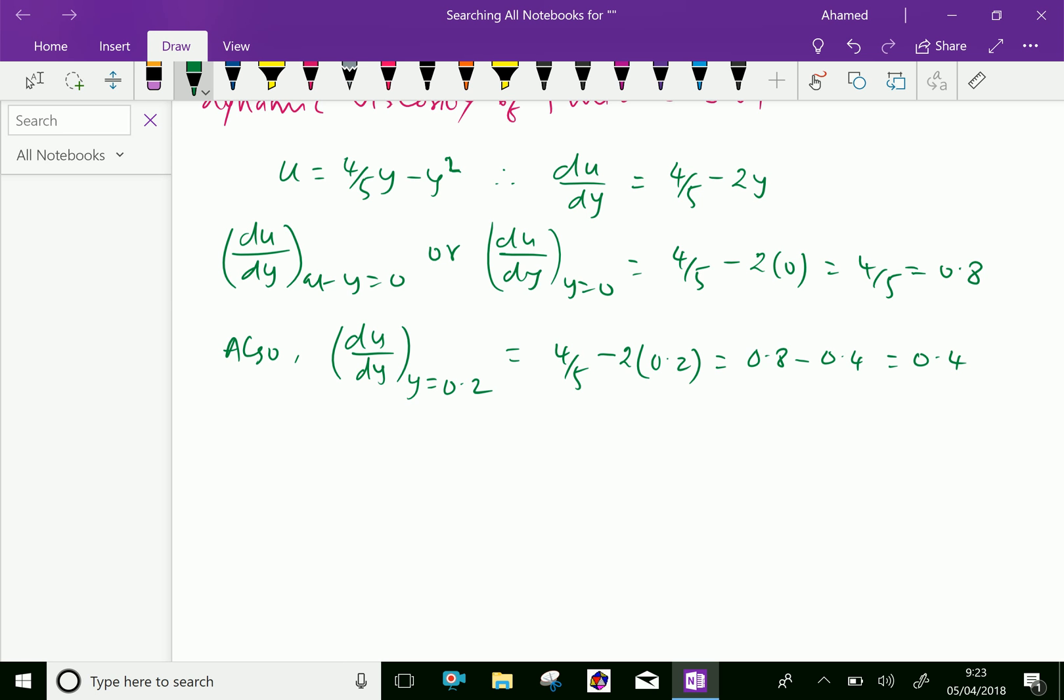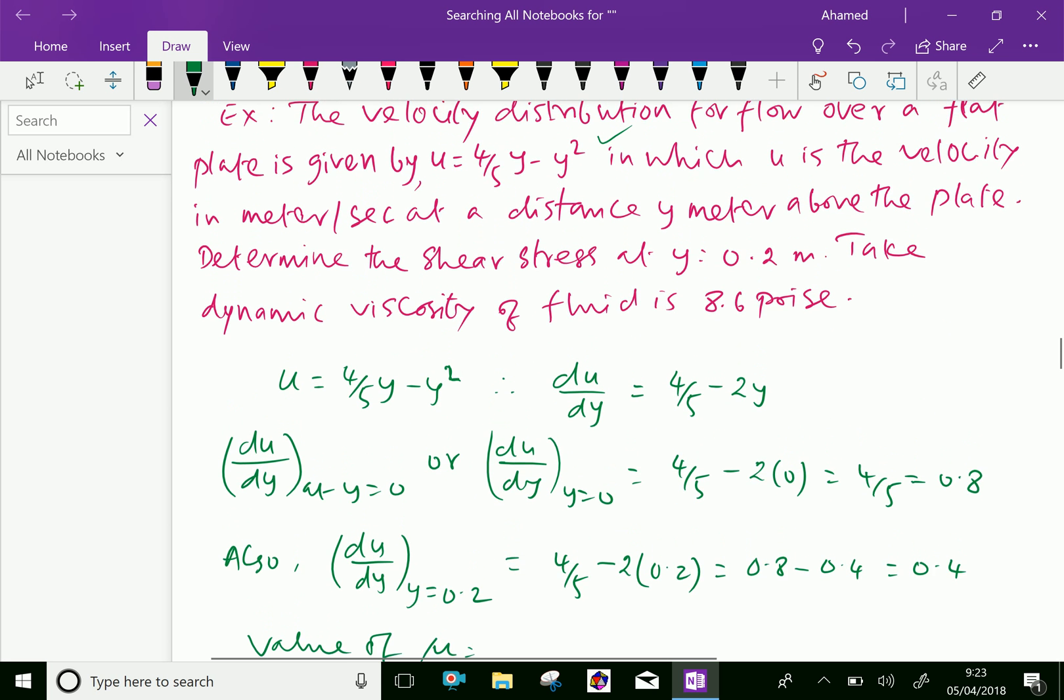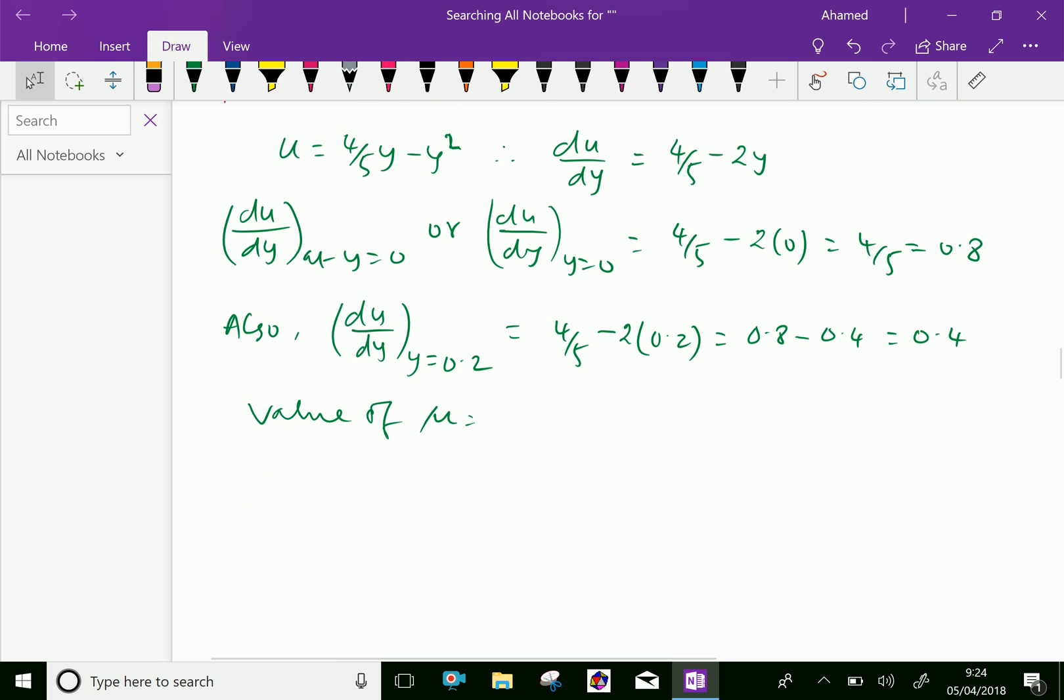The value of μ is given as 8.6 poise, which equals 0.86 in SI units, that is Newton second per meter square.